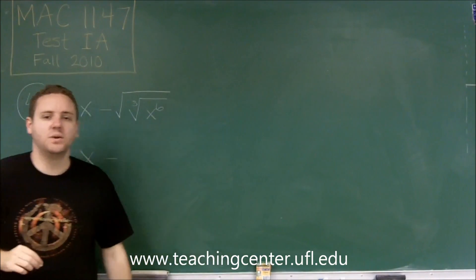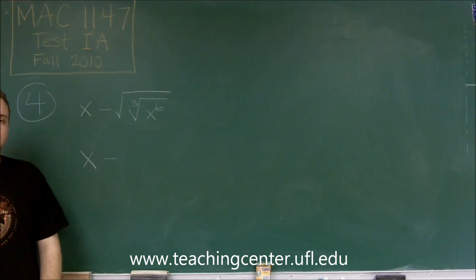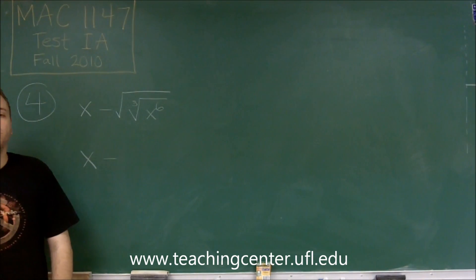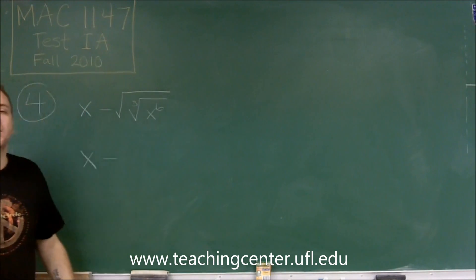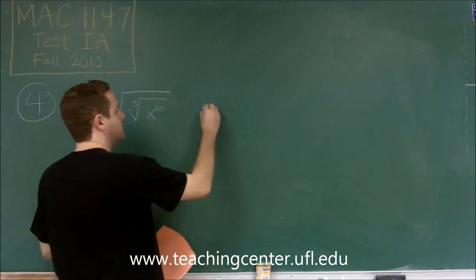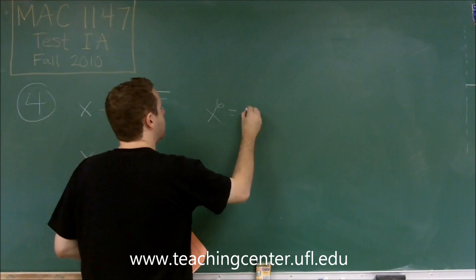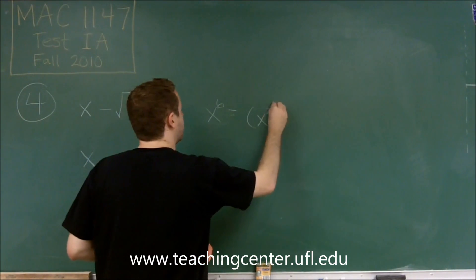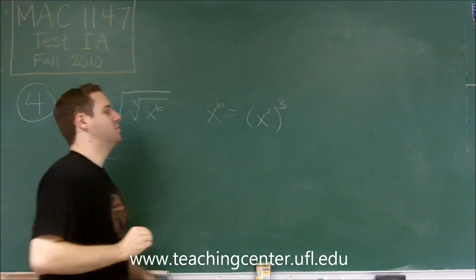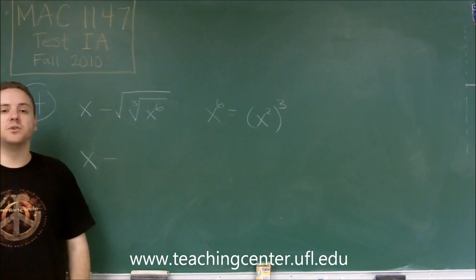So first we need to deal with what is the cube root of x to the 6th. Well, we need to write it as something cubed and then it would go away. So x to the 6th could be written as x squared cubed, because when you take your power to another power you multiply those.